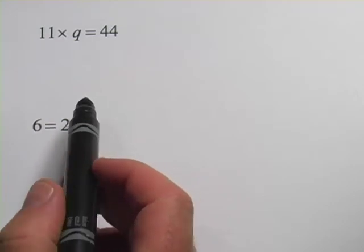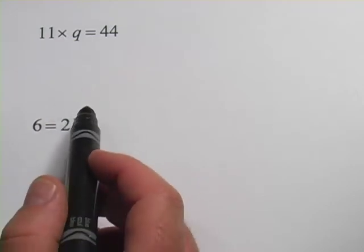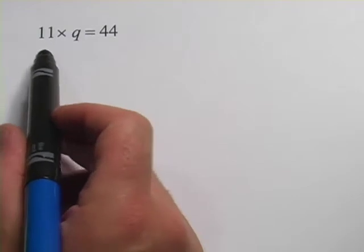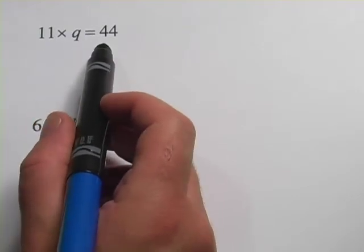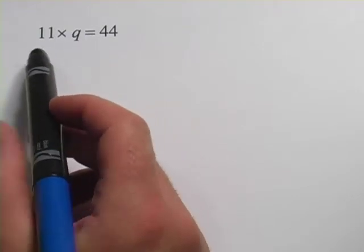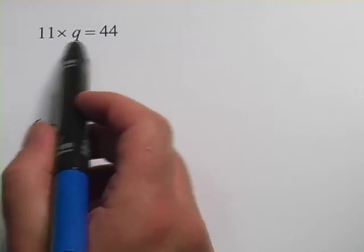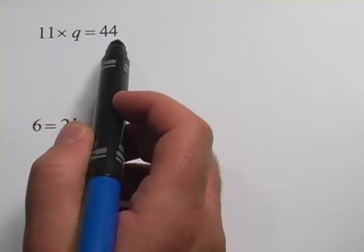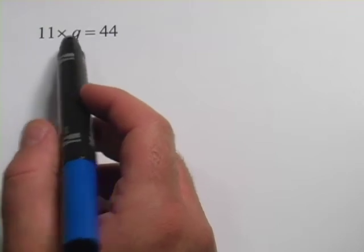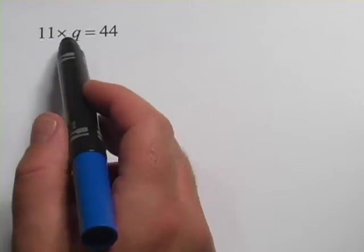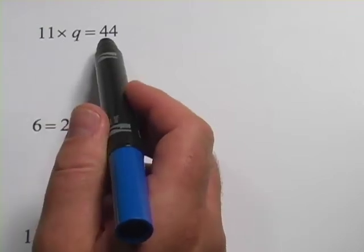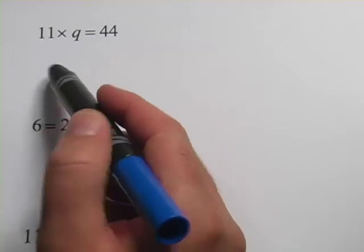Here are some problems where you have a missing number in multiplication equations. This one says 11 times q equals 44. So one way to think about this is to ask yourself, 11 times what is 44? And this one maybe is simple enough for you to say, oh, I think I know that. If you put a 4 in there for q, 11 times 4 would be 44. And if you can do that in your head, good for you, that's great.